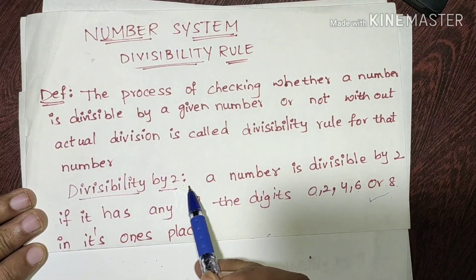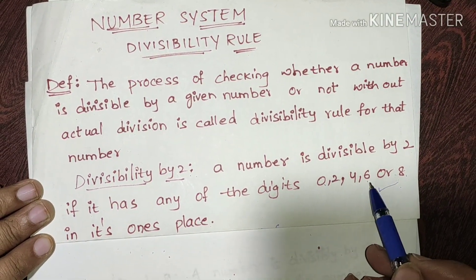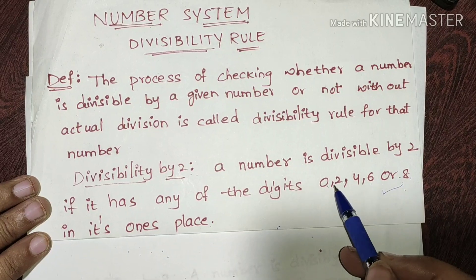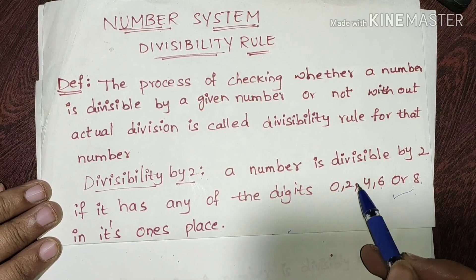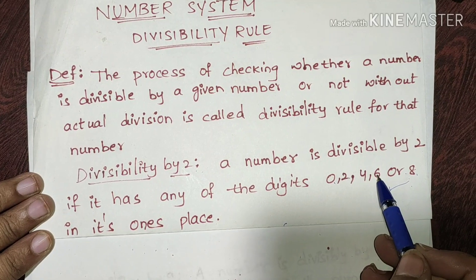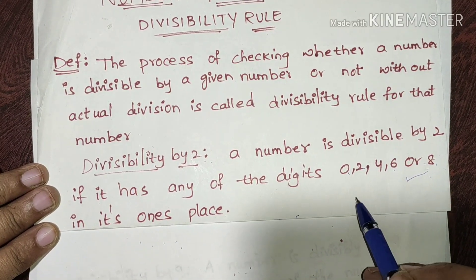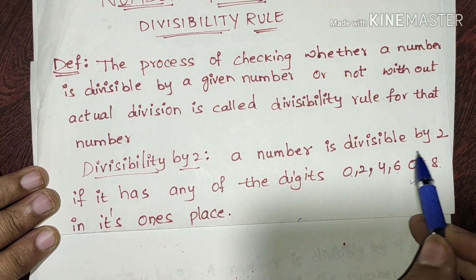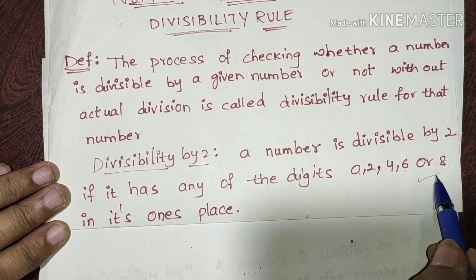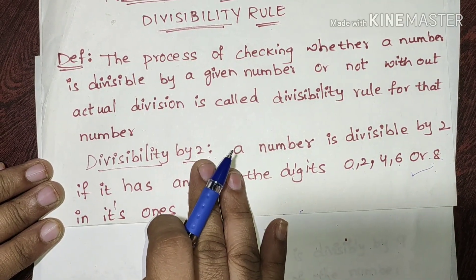The divisibility by 2 rule: a number is divisible by 2 if the digit in the ones place is 0, 2, 4, 6, or 8. We look at only the ones place digit to determine divisibility by 2.